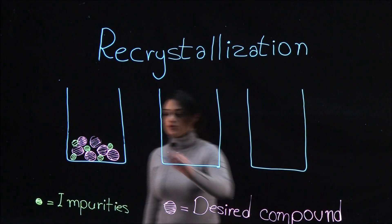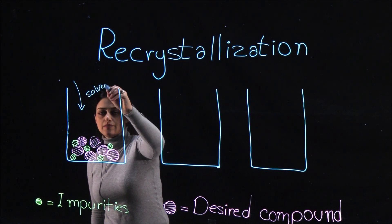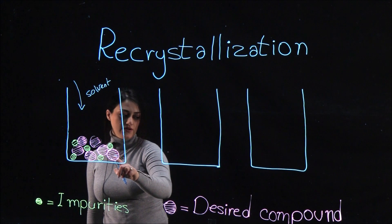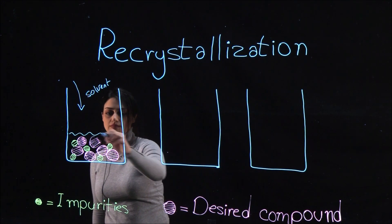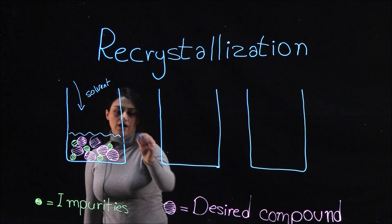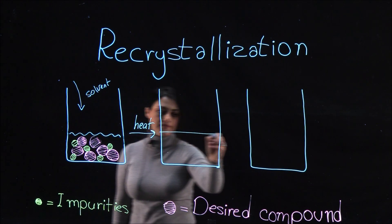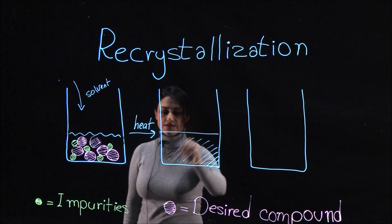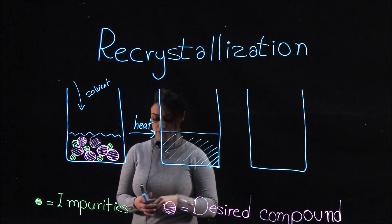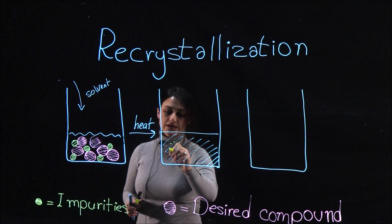First, a very small volume of solvent is added to the impure compound. The impure compound contains the desired compound and impurities. Gently heat until the compound is dissolved. Add more solvent as necessary until this is achieved. Pay attention, adding too much solvent can reduce your final yield.